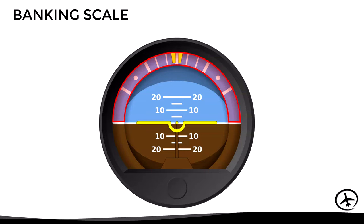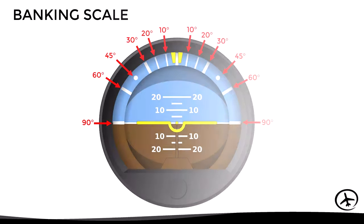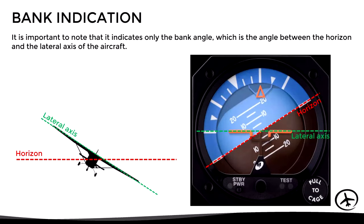The banking scale is located in the upper part of the instrument, where the current bank angle is indicated by the bank indicator — in this case, a yellow bug. When the wings are leveled, the bank angle indicated is zero degrees. The scale has markings on either side representing 10, 20, 30, 45, 60, and 90 degrees of bank. This instrument indicates only the bank angle, which is the angle between the horizon and the lateral axis of the aircraft.